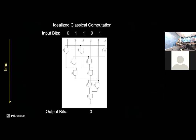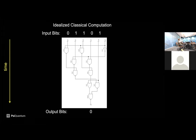Let's start with idealized classical computation. You all know how it works: you have some input classical bits, a gate network that is deterministic, and at the end of the day you get out some output bit — that's the answer to your computation. Most of the time in this talk, I'm going to take time to run vertically.